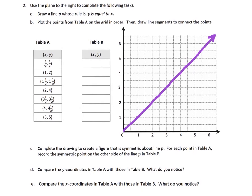Now we're going to plot these points. We've got (½, ½) — that goes right there. Then (1, 2) goes there. Then (1½, 1½) goes right there on the line. Then (2, 4) goes right there. Then (3½, 3½) — when the numbers are the same, we know it lands on the line because that was the definition of the line. Then (4, 4½), which is just barely above the line. And finally (5, 5). There is our figure.